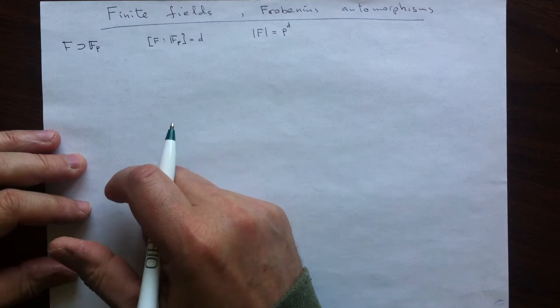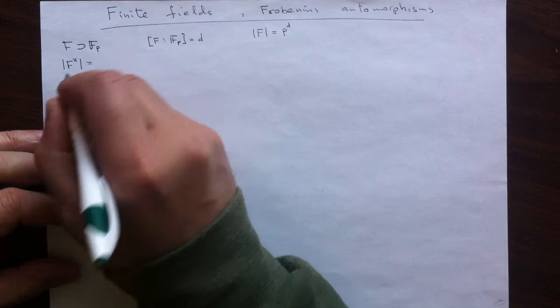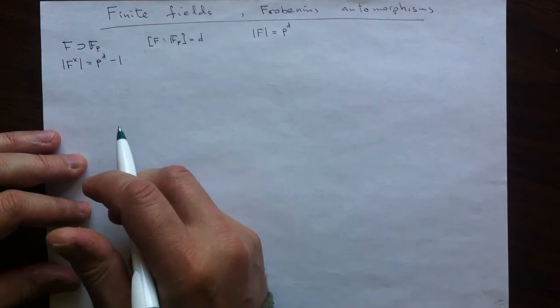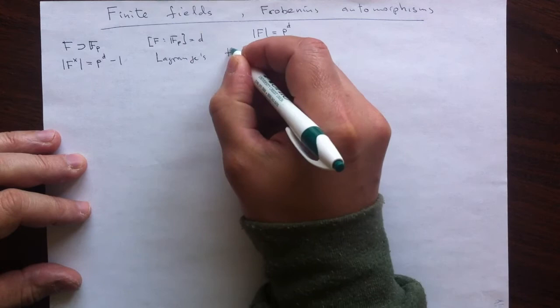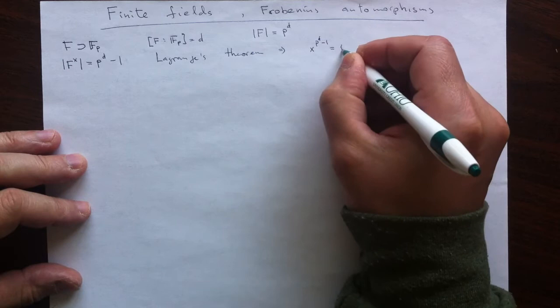So a simple argument from group theory. It is a field, so everything but 0 forms a multiplicative group, forms a group, the multiplicative group of the field. The order of this group will be the total number without 0. So by Lagrange's theorem, we know that any non-zero element of our field raised to this power is equal to 1.